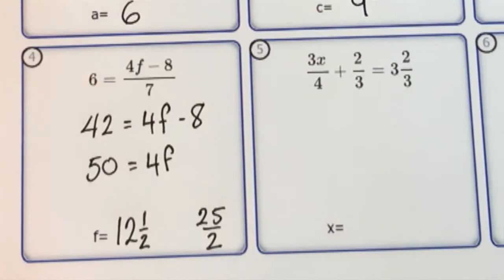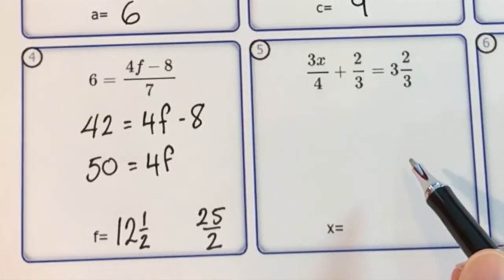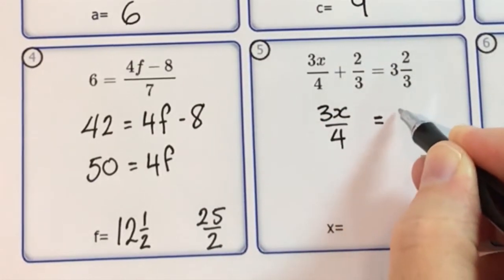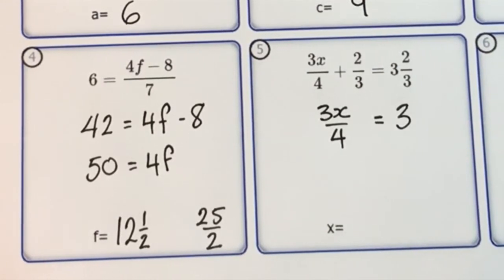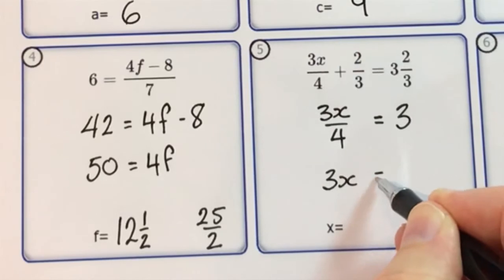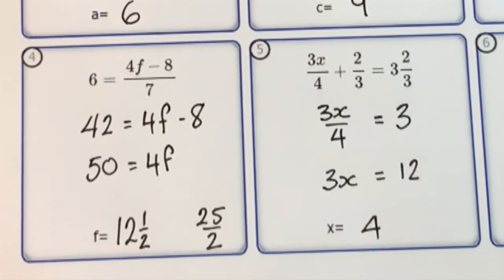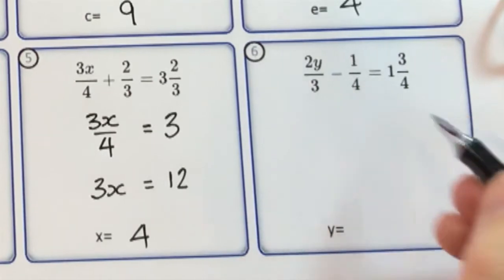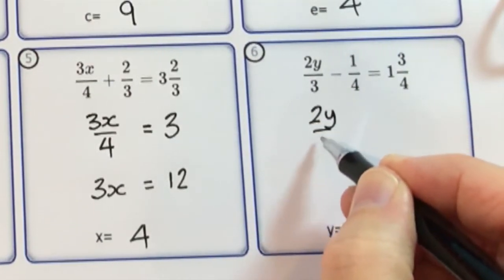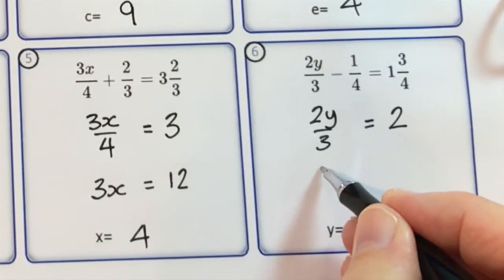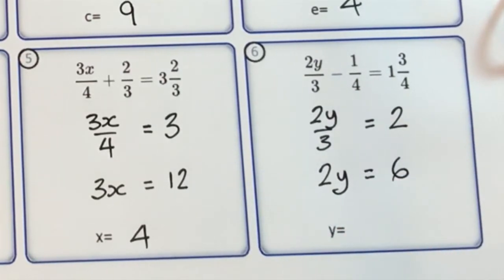For this question, first take away 2 thirds from both sides, leaving 3x over 4 equals 3. Then multiply both sides by 4: 3x equals 12. Divide both sides by 3, so x equals 4. This time, add a quarter to both sides first, so 2y over 3 equals 2, because 1 and 3 quarters plus a quarter is 2. Then multiply both sides by 3, and divide both sides by 2.